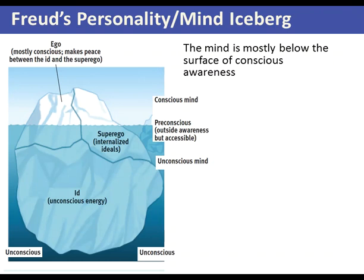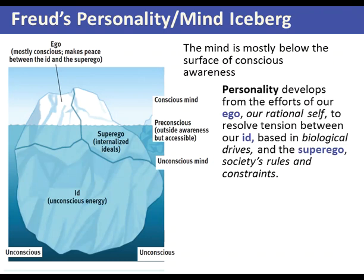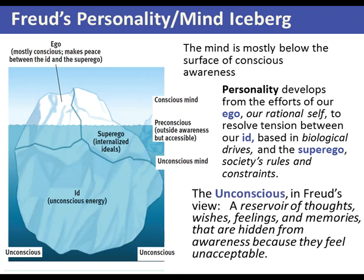There are certain aspects going on that we are not aware of, while things we are conscious of are in our immediate field — like knowing we're sitting watching a lecture. This iceberg illustrates key concepts about not only the unconscious but also the personality structures. Personality develops from the efforts of our ego — our rational self — to resolve the tension between our id, based in biological drives, and the superego's societal rules and constraints.